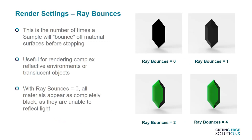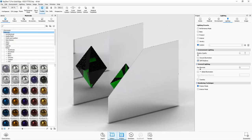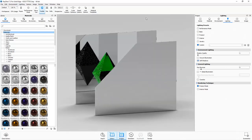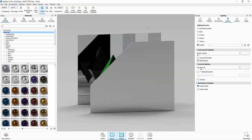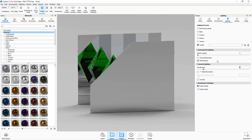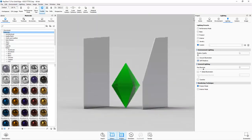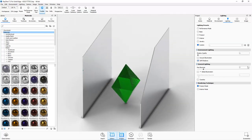Following on from that, we have ray bounces, which tells us the number of times one of our samples will reflect off materials before it stops being calculated. If you need to render something with glass, transparent plastic, or an environment with mirrors, you might want to increase ray bounces. Ray bounces at a setting of zero will mean everything in the scene appears completely black, as the samples don't bounce at all and therefore can't reach a light source. For example, here we have a model of a jewel between two mirrors. Watch the behaviour of the reflection of each mirror and the reflection of the jewel — when I increase the number of ray bounces, the number of possible reflections increases, and the jewel itself becomes more realistic, with fewer black specks in it.